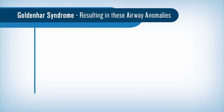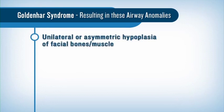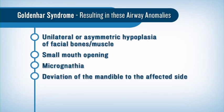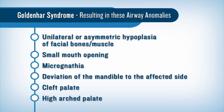In Goldenhar syndrome, also known as hemifacial microsomia, anomalies include unilateral or asymmetric hypoplasia of the facial bones and muscle. As a result, any of the following airway anomalies may be observed: small mouth opening, micrognathia, deviation of the mandible to the affected side, cleft palate, and a high arch palate.